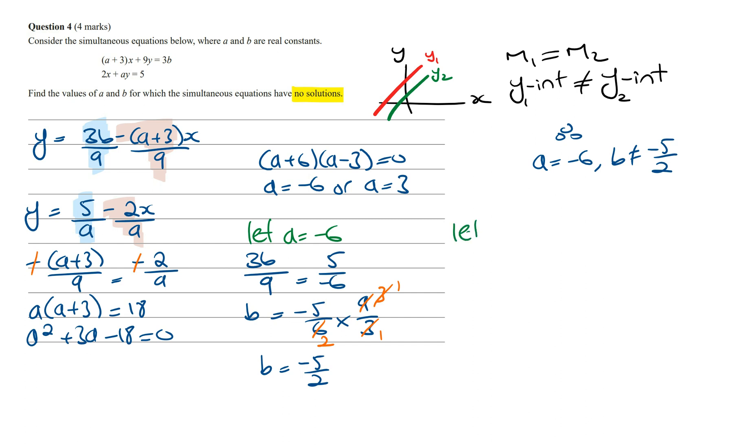And now we need to test the value of A when it's equal to 3. And so the Y-intercept is going to be 3B over 9, and this is going to equal 5 on 3. Solving for B, B is going to equal 5 on 3 times 9 on 3. And so the two 3s will cancel out with a 9, and so the value of B is going to be 5.